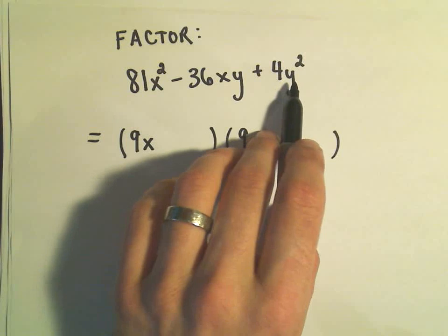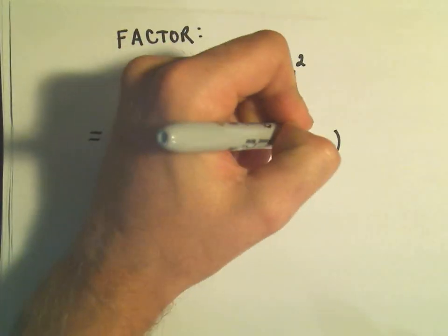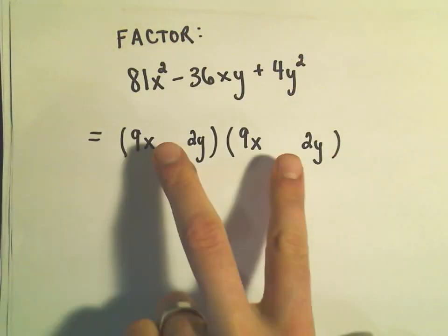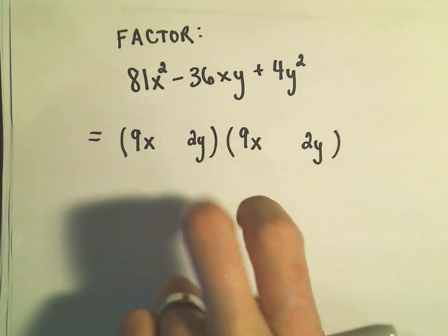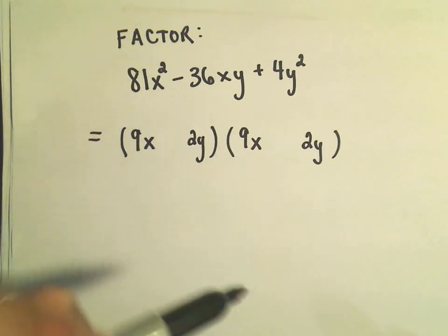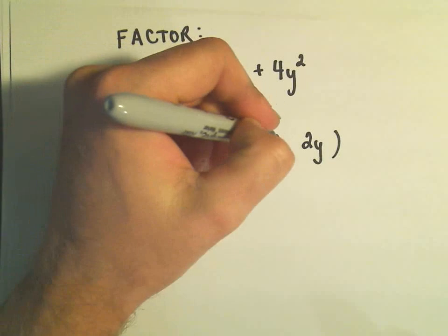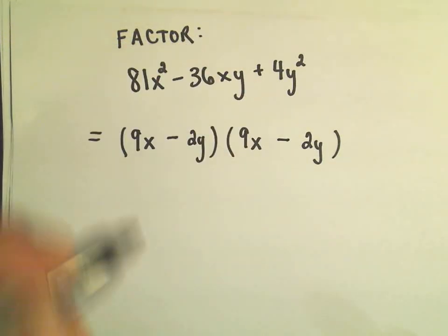To get the 4y², I'm either going to need a positive 2y and a positive 2y, or they'll both have to be negative. But since the term in the middle is negative, they'll both have to be negative.